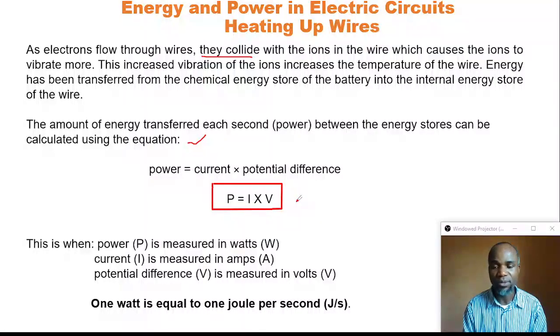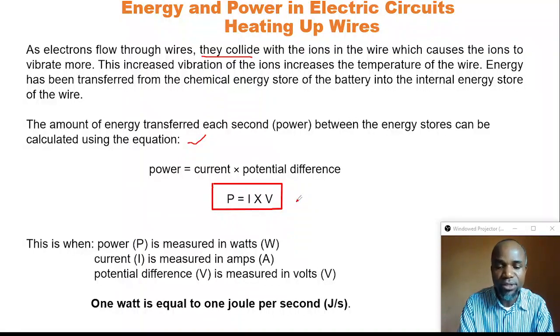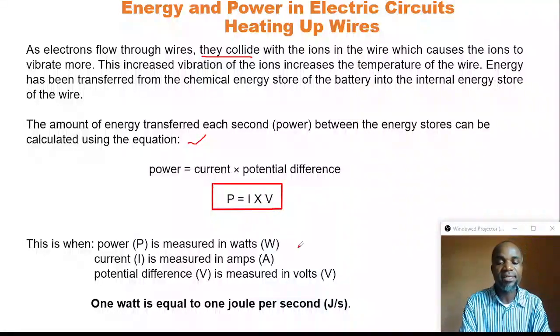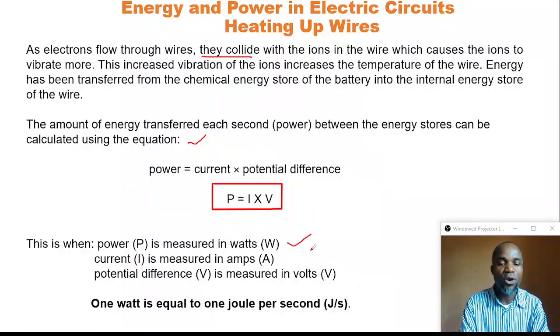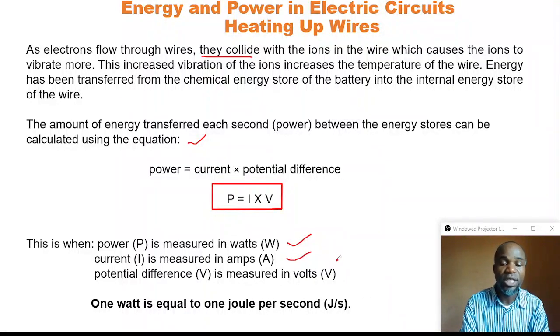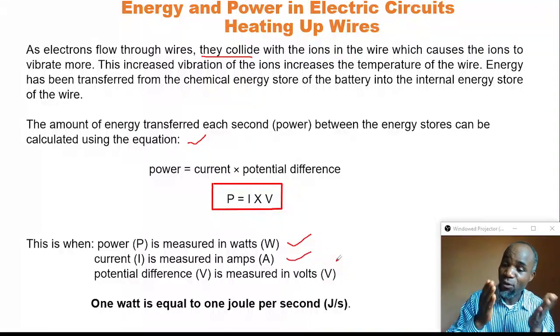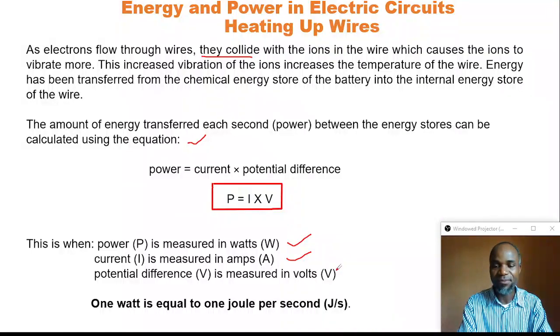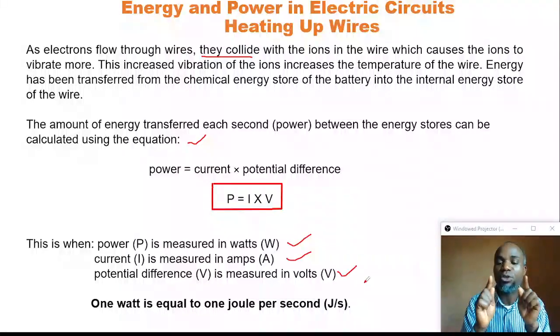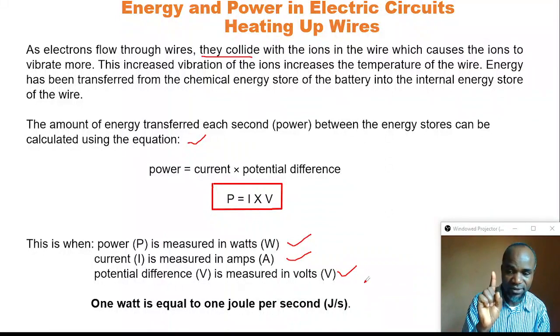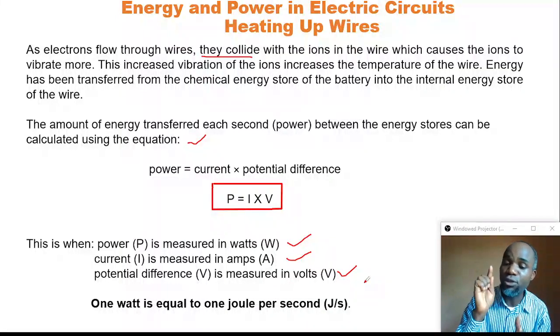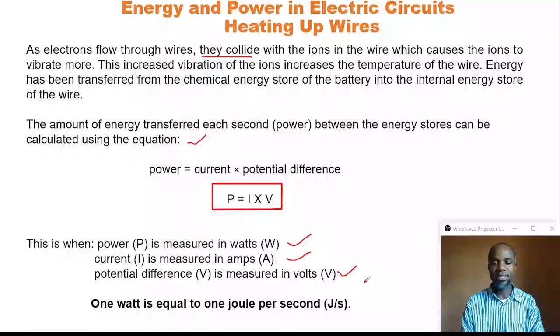This is when power P is measured in watts, current I is measured in amperes, and potential difference V is measured in volts. One watt is equal to one joule per second.